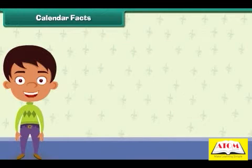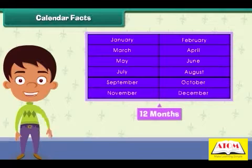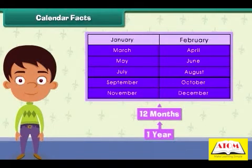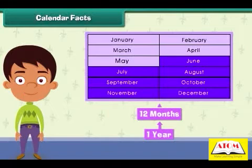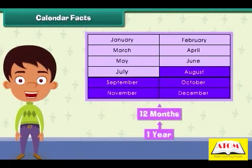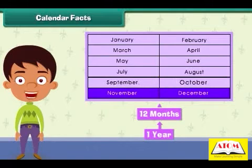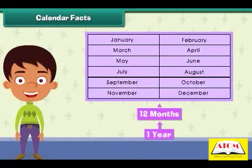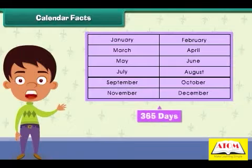There are 12 months in a year. The months are January, February, March, April, May, June, July, August, September, October, November, and December. When all the days are counted in a year, it sums up to 365 days.